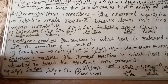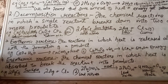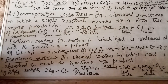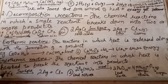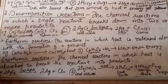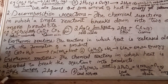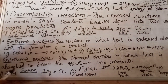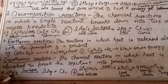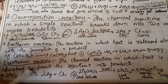The fourth type is endothermic reactions. In endothermic reactions, heat is absorbed to break the reactant into products. To carry out the reaction, we need external energy — sometimes sunlight, sometimes heat — so that the bonds get broken and the reactant splits into products. For example, silver chloride kept under sunlight changes color to gray, because the sunlight broke the bonds of silver chloride and split it into silver and chlorine.